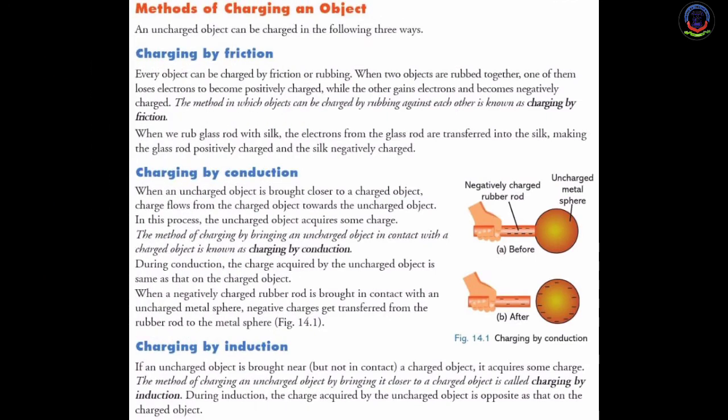Methods of charging an object: An uncharged object can be charged in the following three ways — (1) charging by friction, (2) charging by conduction, (3) charging by induction.